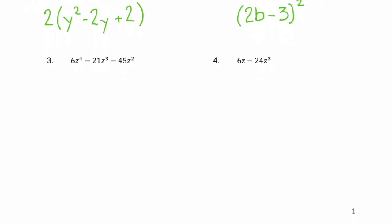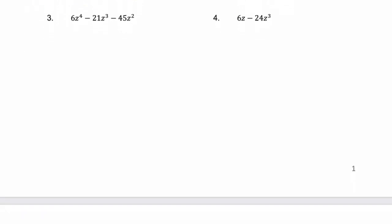Let's look at example 3: 6z to the fourth minus 21z cubed minus 45z squared. Do we see a GCF? Of course — we see 3z squared. When we factor out that GCF of 3z squared, we get 2z squared minus 7z minus 15.